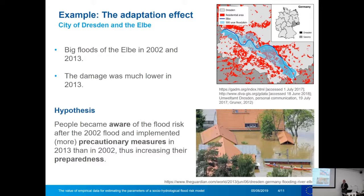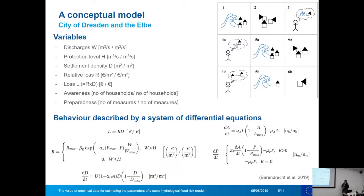Another example is the adaptation effect. One example is the city of Dresden and the Elbe, where there were big floods in 2002 and 2013. Hydrologically the floods were of similar size, but in 2013 the damage was much lower. The hypothesis is that people became aware of the risk in 2002 and implemented precautionary measures, like installing floodgates or moving valuable things to higher levels, increasing their preparedness so that damage was lower in 2013.